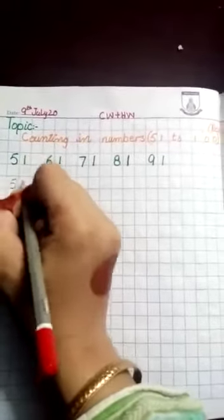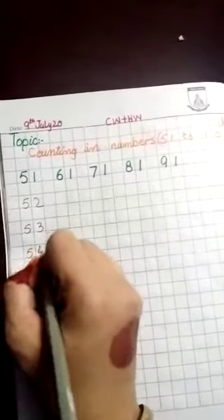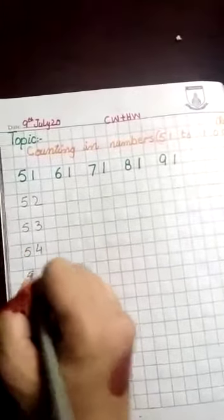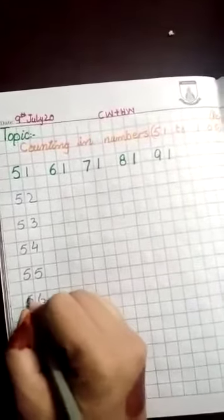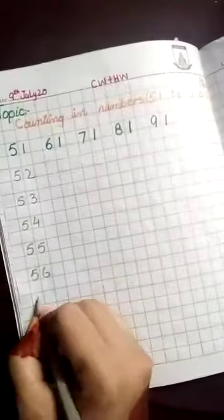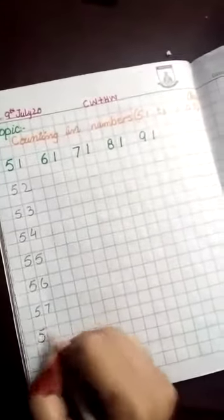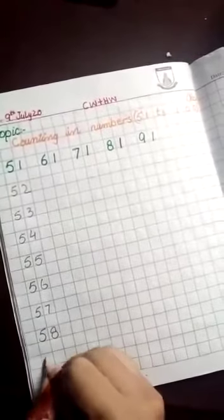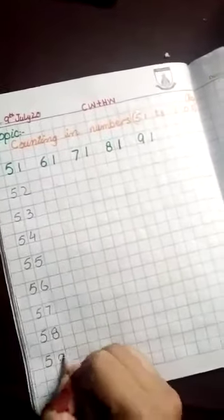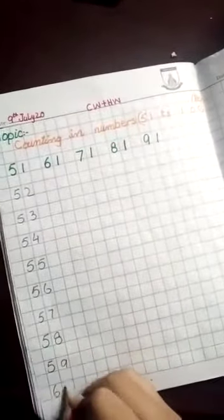Revision. Okay, write down the counting. 51, 52, 53, 54, 55, 56, 57, 58, 59, 60.